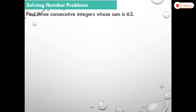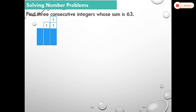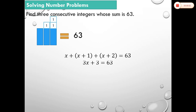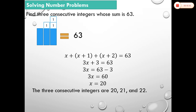Next example: Find three consecutive integers whose sum is 63. Let the first integer be x. The next integer is x + 1, and the one after is x + 2. Their sum equals 63, so x + (x + 1) + (x + 2) = 63. Then 3x + 3 = 63, so 3x = 60, and dividing both sides by 3 gives x = 20. Therefore, the three consecutive integers are 20, 21, and 22.